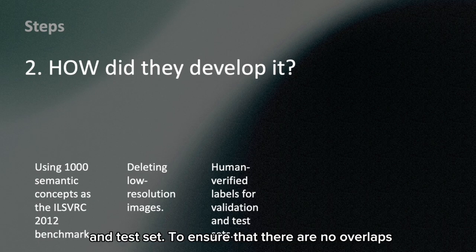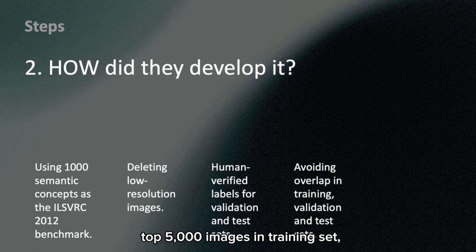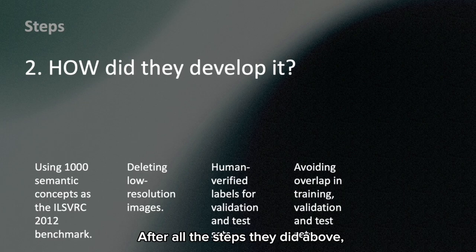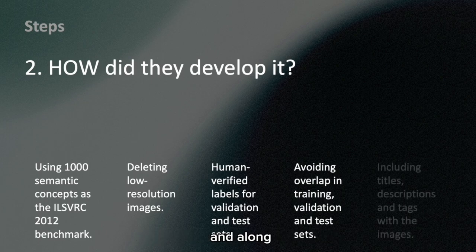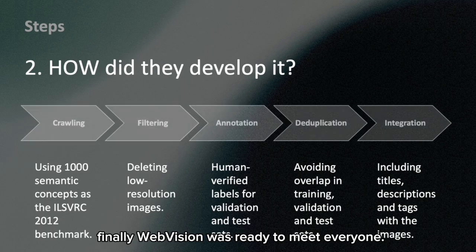To ensure that there are no overlaps between the training set and the validation or test sets, the researchers removed the top 5,000 images in the training set that are most similar to the validation and test sets. After all these steps, along with the metadata crawled from the websites, WebVision was finally ready to meet everyone.